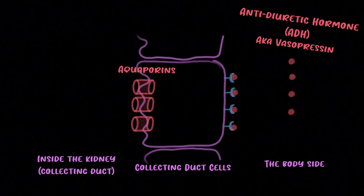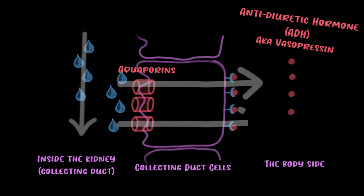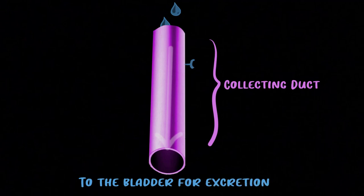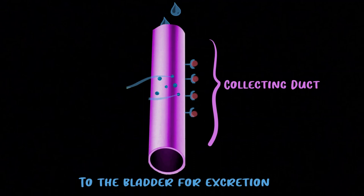Aquaporins are literally just tiny tubes that water can pass through. Normally, water flows straight through the kidneys, but when ADH causes aquaporins to be inserted into the collecting duct, water gets pulled out and returned to the body. So the collecting duct is like tubes without holes — water passes through — until ADH creates holes, allowing water reabsorption.